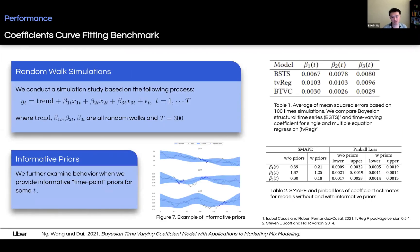Moving on to the performance section, we want to know how closely we can recover the true coefficient values. We conducted a simulation study where trend and other coefficients of the current regression follow a random walk. Among 100 simulations, we compare against two other popular time-varying coefficient methods, BSTS and TVRAM. Our model demonstrates a significant advantage over the other two models. We also find that using informative time-point priors can further improve performance in terms of estimate and pinball loss.